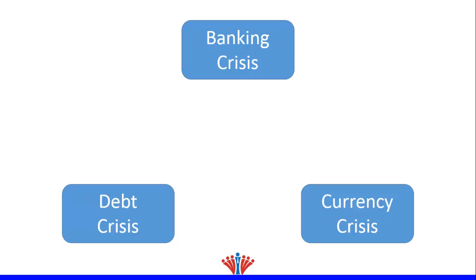Another cause is high-risk lending, where governments lend to other countries with high default risk that could be unable to repay back the money. It could happen also due to the burst of existing bubbles such as real estate, which results in a sharp decline in asset price and the need for government to inject more money into the economy to increase liquidity. In that case, governments work as a lender of last resort.